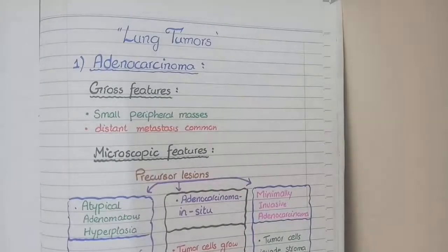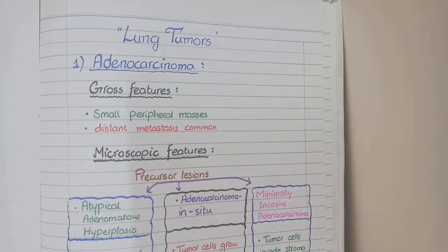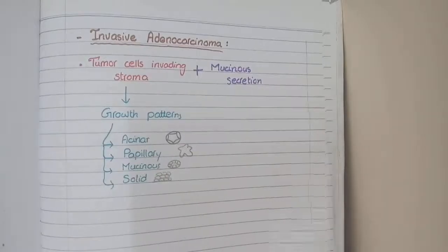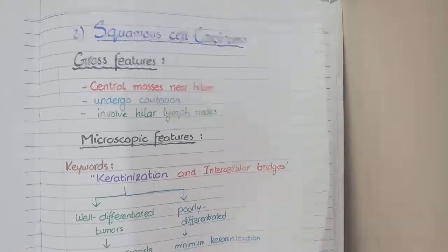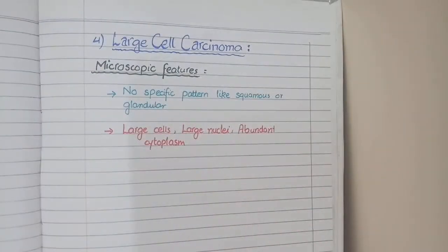In this video we will discuss the pathology of lung tumors or lung cancers. This topic is very important from an examination point of view as well as a clinical point of view. Lung cancers are classified into four types: adenocarcinoma, squamous cell carcinoma, small cell carcinoma, and large cell carcinoma.